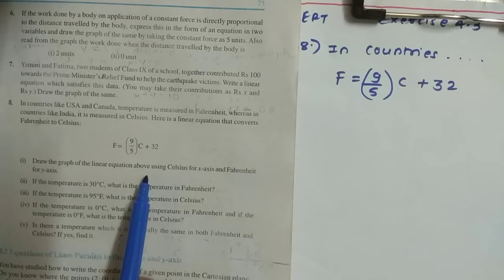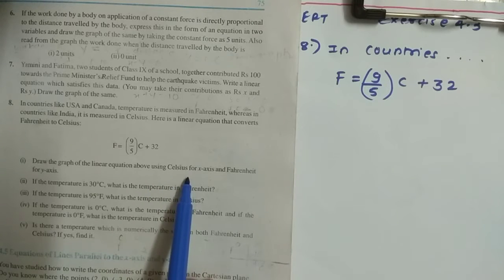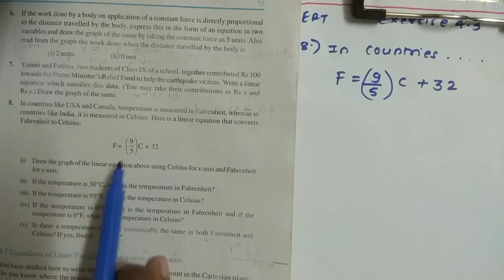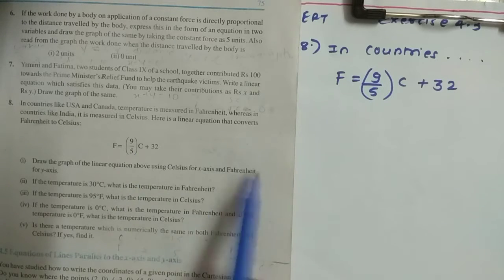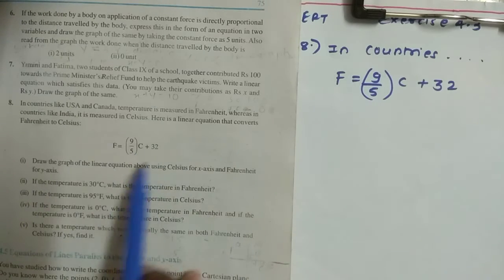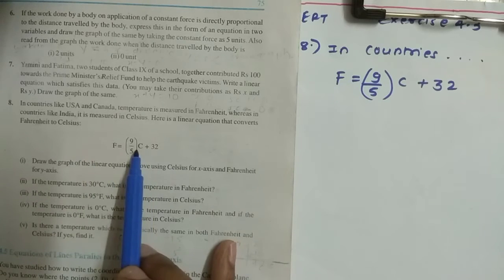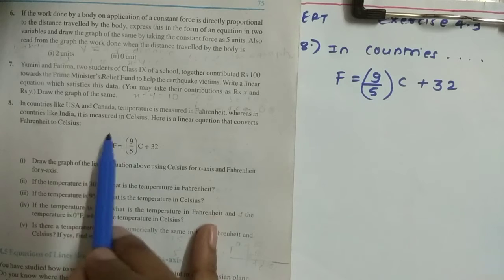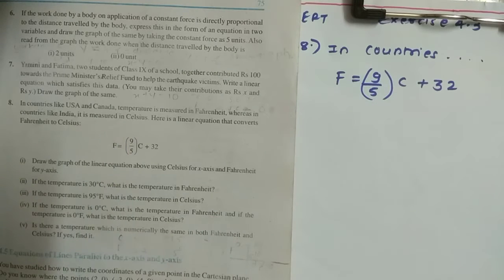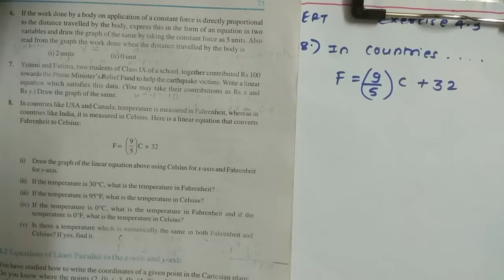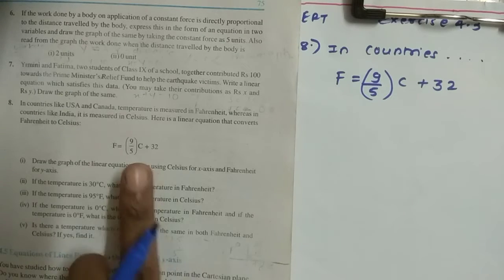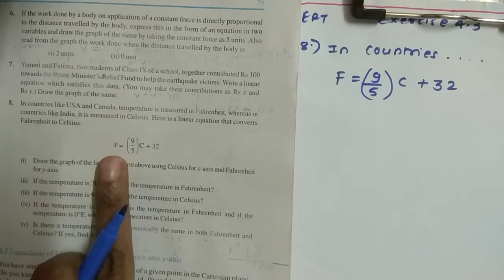Draw the graph of the linear equation above using Celsius for the x-axis and Fahrenheit for the y-axis. So you have to show Celsius on the x-axis and Fahrenheit on the y-axis. The ready-made equation is given. You just have to put 3 values of Celsius and calculate the respective values of Fahrenheit. So first we will find out 3 values of Celsius and 3 values of Fahrenheit.